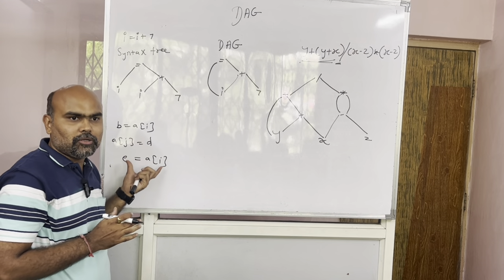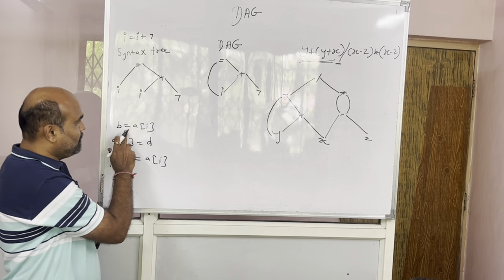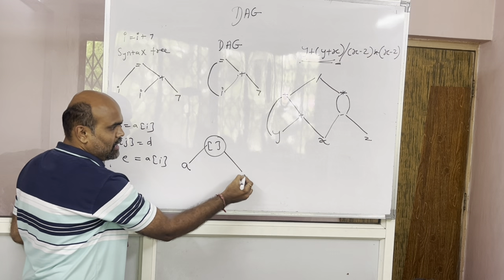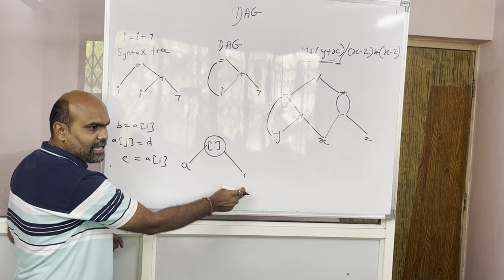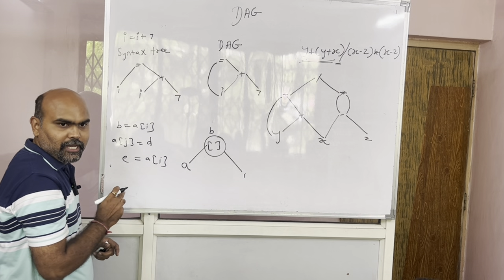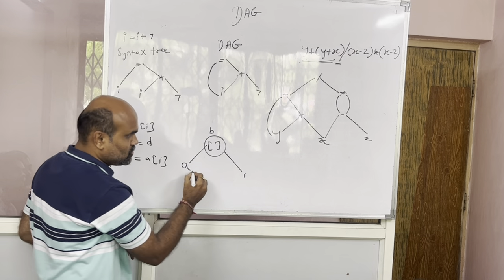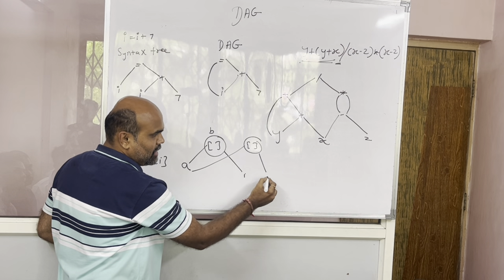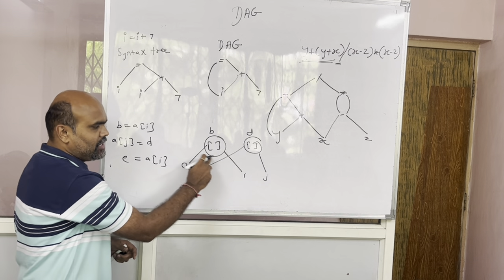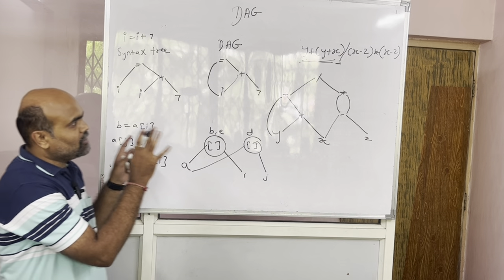Next, this basic block — isko block bola jata hai. To hamare is basic block ka DAG nikalana hai. Iska kaise nikalenge: b equals to a of i. Sabse pehle hum draw karenge a of i. Then b equals to a of i. Next, a of j equals to d. Yeh a hamare paas common hai, so a of j — yeh ho gaya j, then d equals to. Then e equals to a of i — a of i hamare already hai, so comma karke haem e likhenge. Yeh kuch example ho gaya haemara DAG.